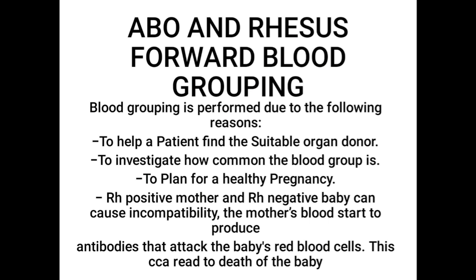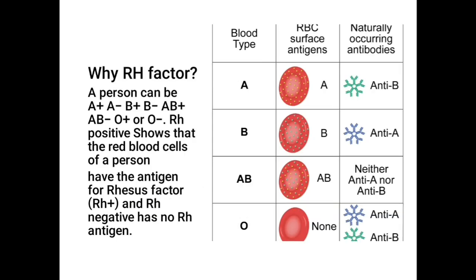Blood grouping can also help to plan for a healthy pregnancy. For example, if a mother is Rh positive and the fetus is Rh negative, this can lead to incompatibility where the mother's blood starts producing antibodies that cross the placenta and attack the red blood cells of the fetus, which can lead to death.